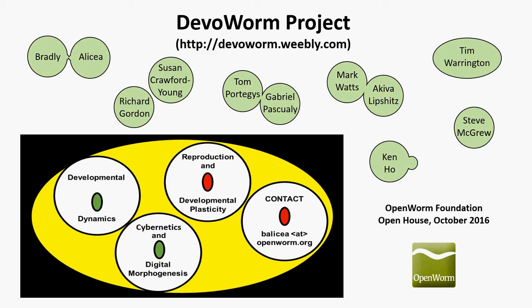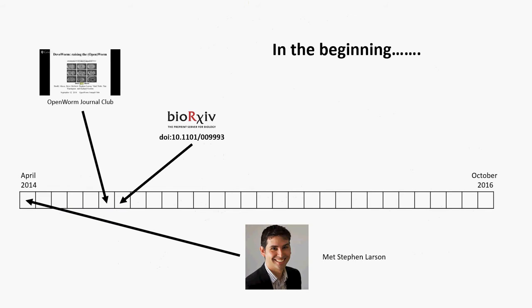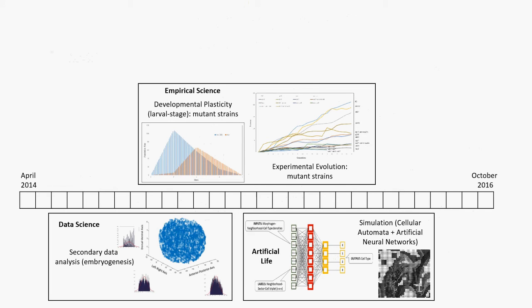We have three interest groups, which are in the cells in the lower left-hand corner. I met Steve Larson in April of 2014, and right away we started working on a couple of things. One was a technical paper, and the other was a journal club laying out the major problems of this task, which was to deal with the developmental component of OpenWorm and to understand how the worm develops into the adult form that people were trying to simulate in the OpenWorm project.